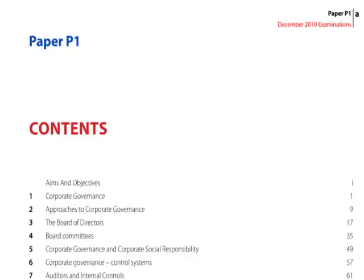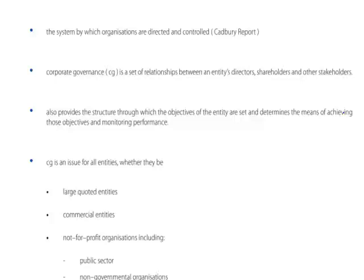Corporate governance is defined by Sir Adrian Cadbury as a system by which organisations are directed and controlled - a set of relationships between the entity's directors, shareholders, and other stakeholders. It establishes why it's important that companies should follow these principles, and why following the principles should help us avoid high-profile corporate failures.